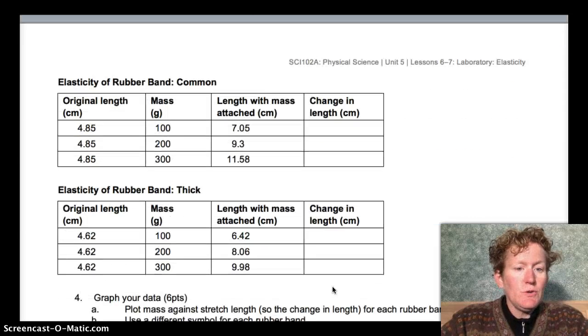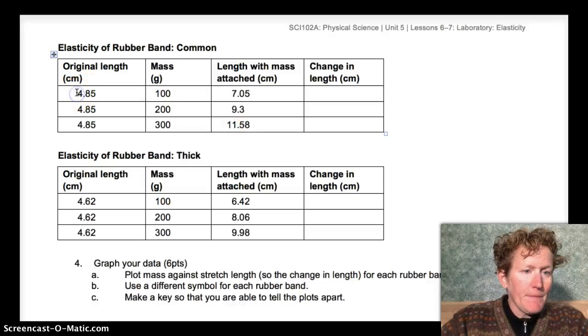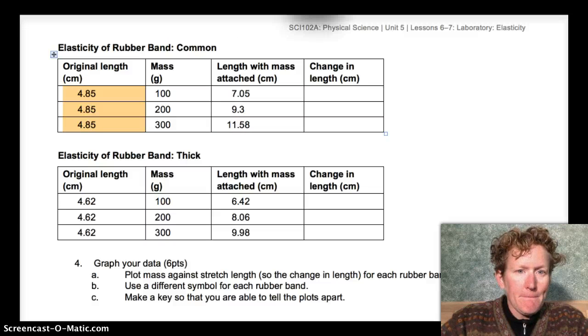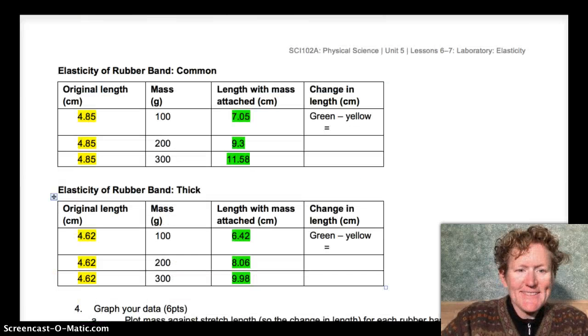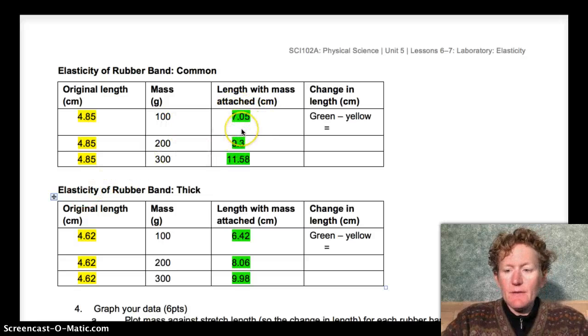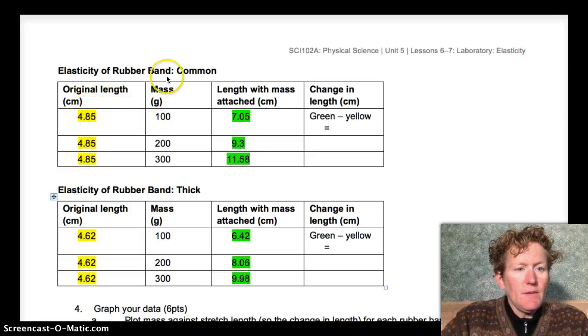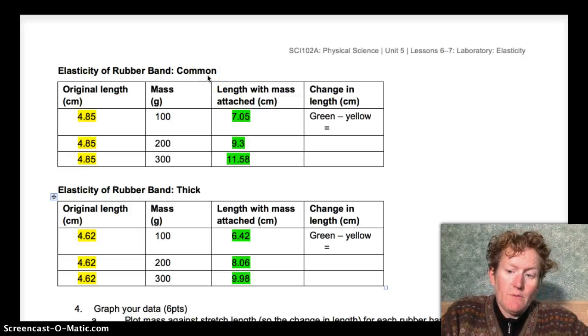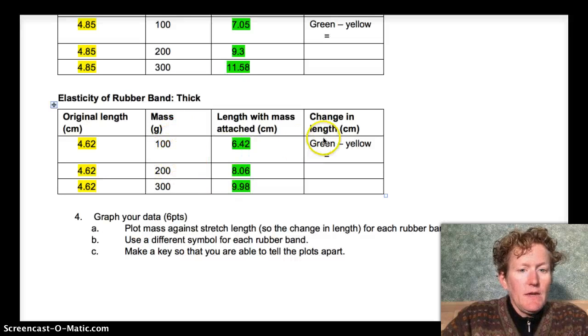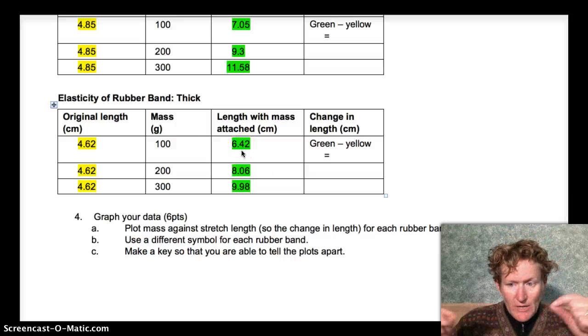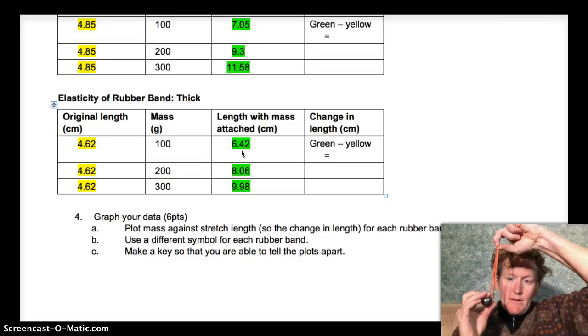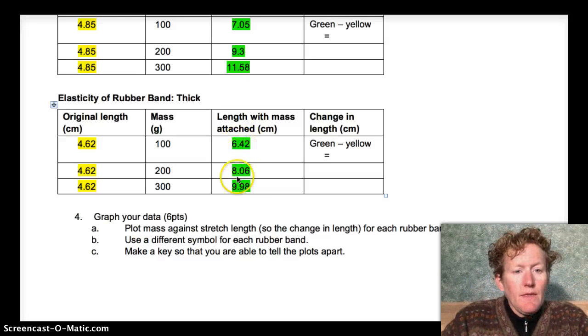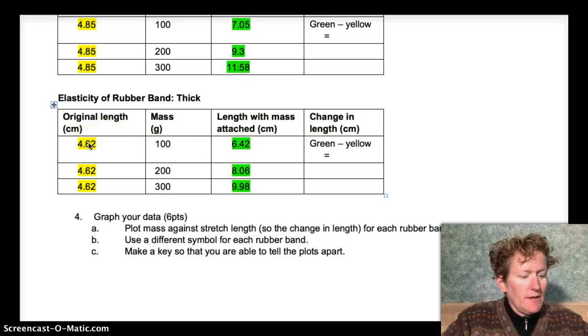For the thin rubber band, we'll go to page 2 here, and you can do the same thing. All you need to do is take these green numbers, that's the length with the mass attached, and subtract the yellow numbers for all these tables. Here's the common rubber band, or what you might know as a regular rubber band, and then here's a thick rubber band with different masses attached. To find the change in length, just take the green number, the stretched rubber band with the mass attached. Just think of putting a heavy mass, something like this ball on it and hanging it. Take this number and subtract the original length, the unstretched length.